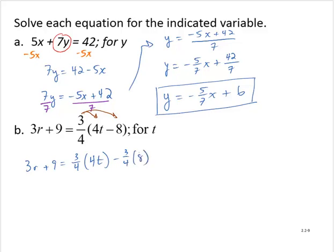We can reduce here between the 4s. The 4 and the 4s leave 1's. And the second term, we have the 4 and the 8 leaves a 1 and a 2. And so this simplifies as 3r plus 9 is equal to 3t minus 6.